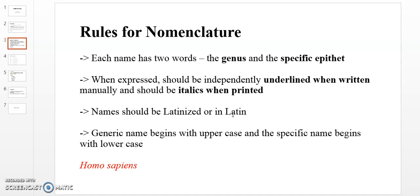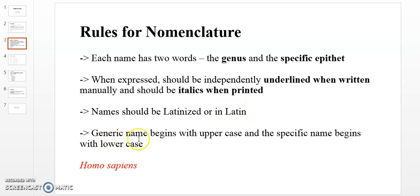The names should be Latinized or in Latin. For example, Homo sapiens uses Latin words. Mangifera is a Latin word, and indica is also a Latin word. The fourth rule is that the generic name begins with an uppercase letter and the specific epithet begins with a lowercase letter.